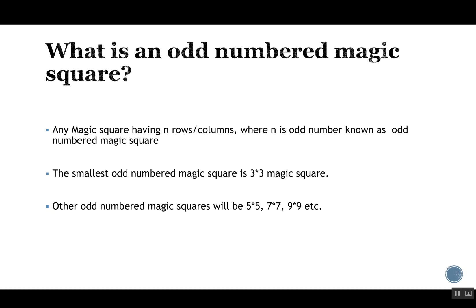Now we know what a magic square is. An odd numbered magic square is any magic square with n rows and columns where n is an odd number. The smallest odd numbered magic square is 3×3. A 1×1 cannot count since it is just one cell and cannot form rows or columns. Other odd numbered magic squares can be 5×5, 7×7, 9×9, and so on.